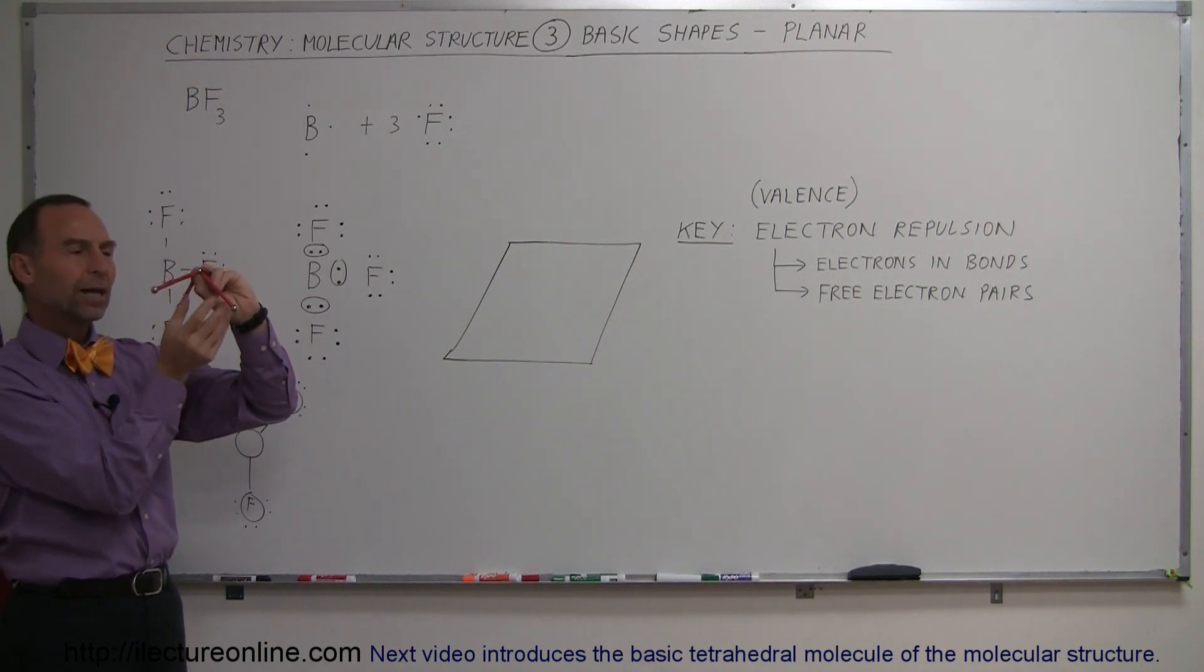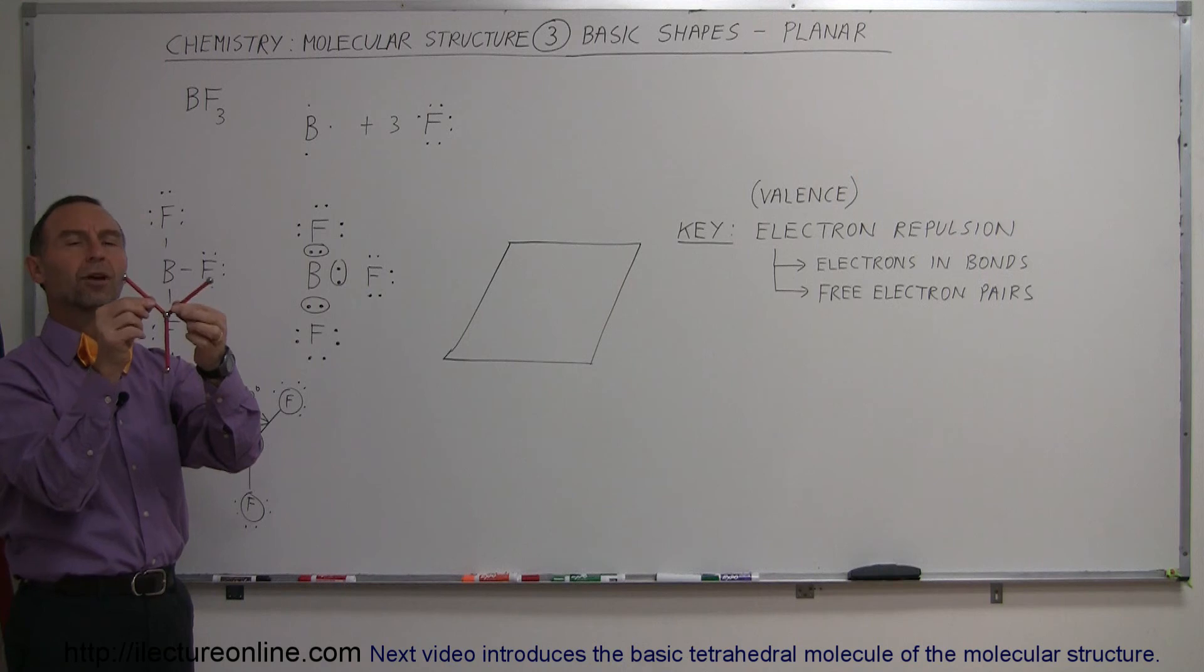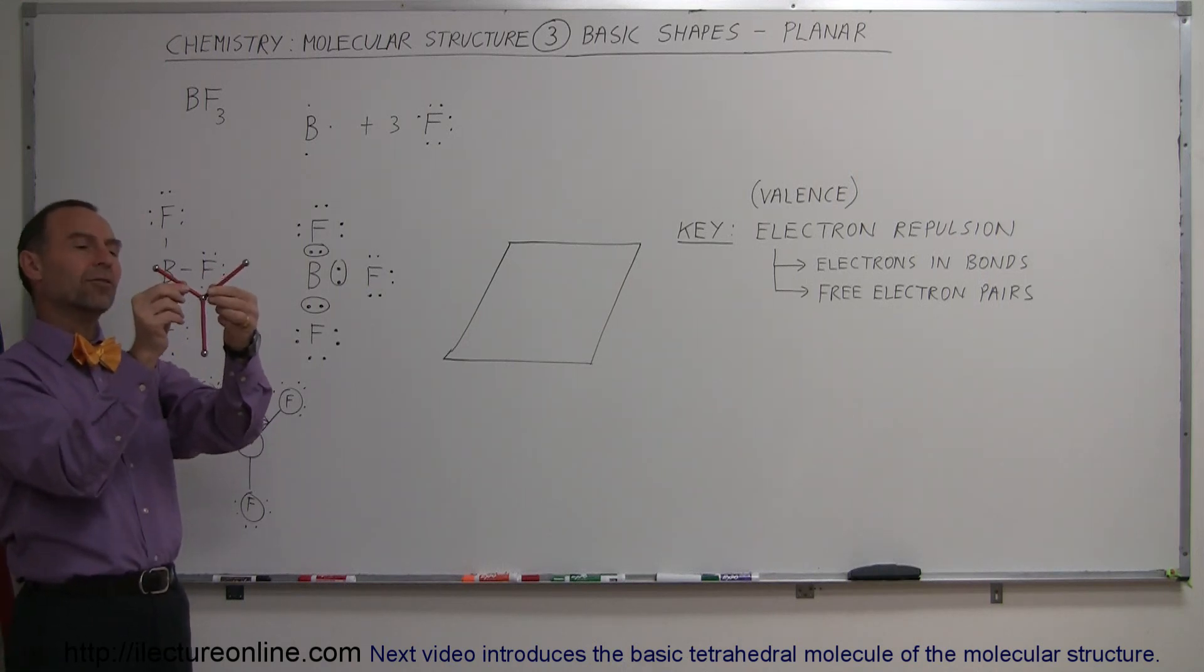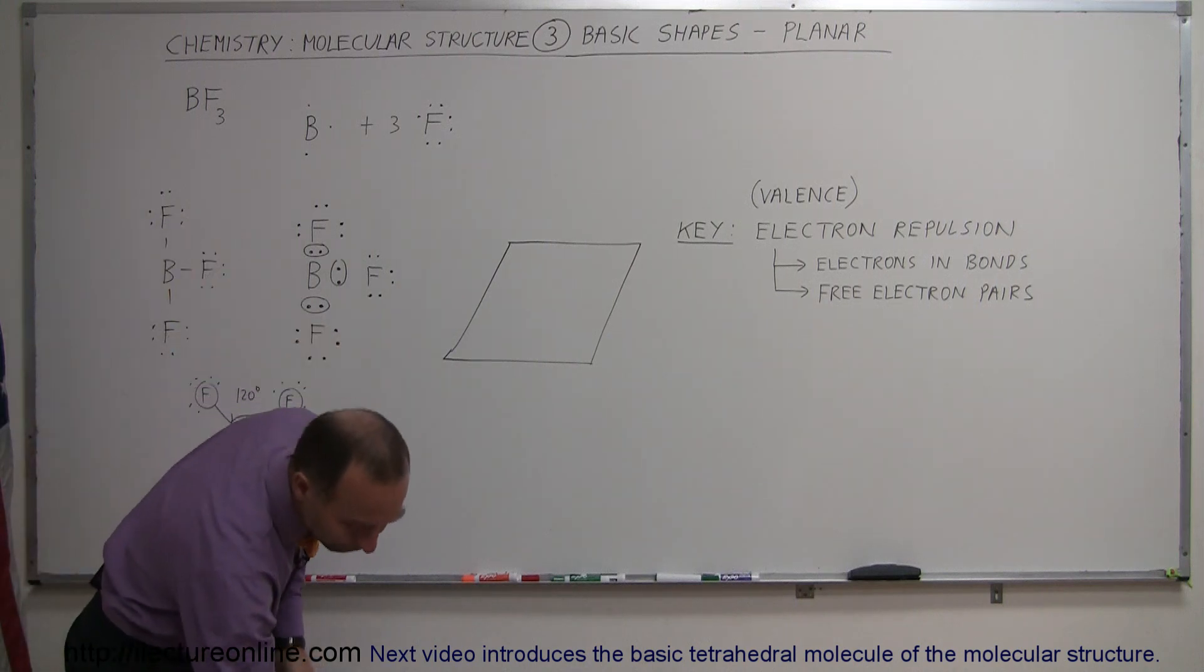So the repulsive forces become greater, so that means that they will simply repel each other out again until they're at the maximum bond angle away from each other of 120 degrees. So you can see that there's no other natural position that these bonds can be in, otherwise the repulsive forces would increase. This is the lowest energy state of this particular molecule and therefore it exists in a planar shape like that.